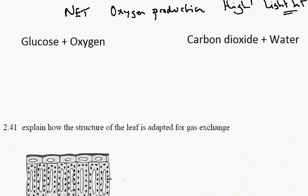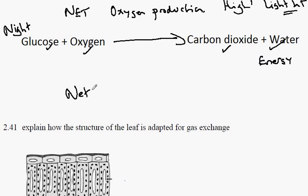If we compare that with the night situation, respiration continues. Glucose is broken down in the presence of oxygen to produce carbon dioxide and water, releasing energy for plant processes. But photosynthesis is not occurring, so there is a net production of carbon dioxide.